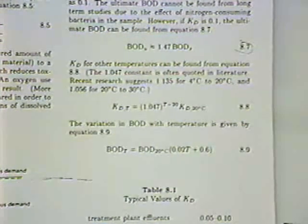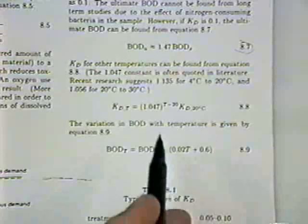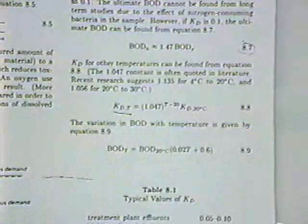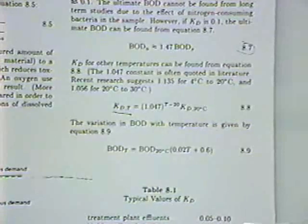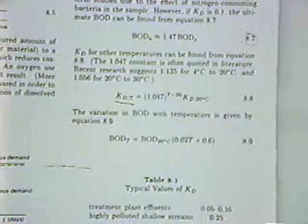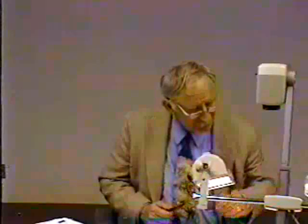When you run the BOD, you run it at a temperature. The temperature in the lab may differ from the river temperature — the river in winter has a different temperature than in summer. Here's a way to convert K from one temperature to another. Normally we report results at a standard temperature, such as 10 to 20 degrees Celsius, then convert to whatever temperature we want using equation 8.8, or a variation in equation 8.9. They have typical values of KD in table 8.1 and an example problem — just plug into equation 8.5.